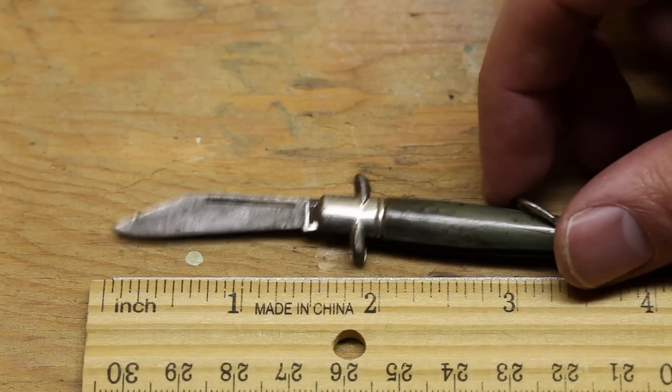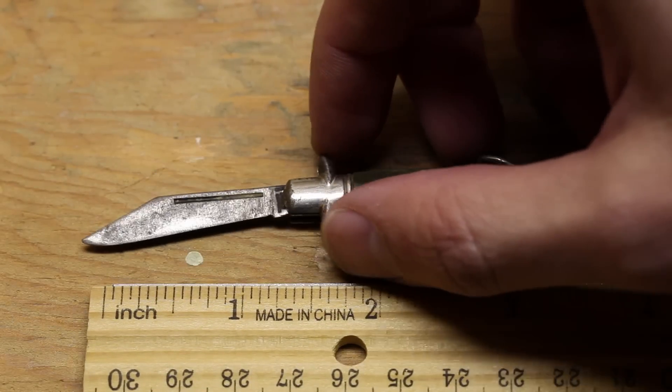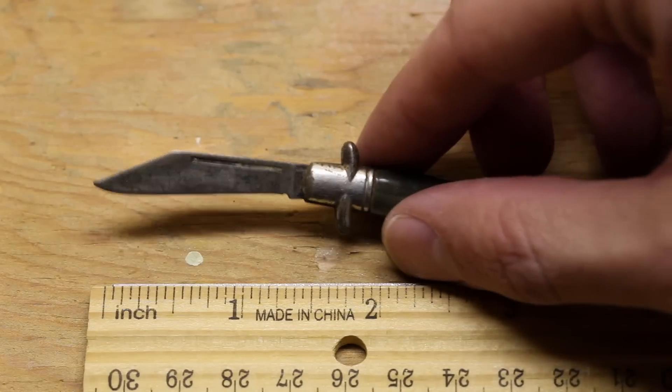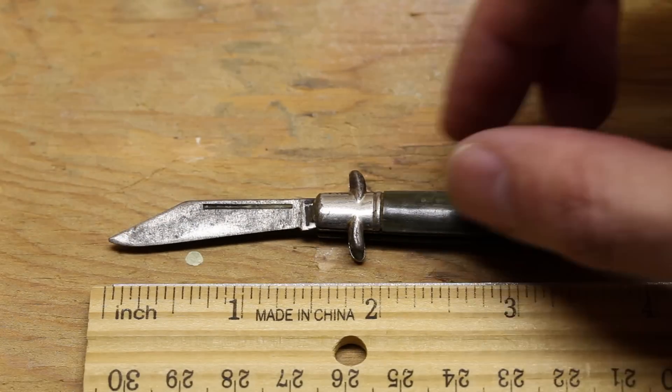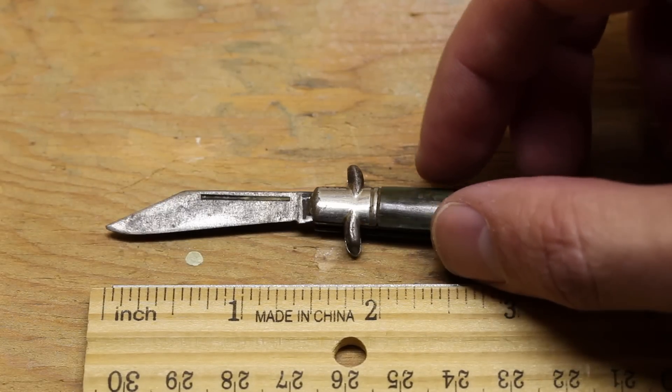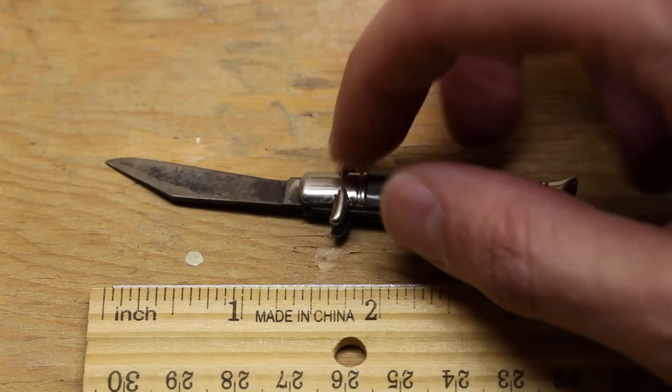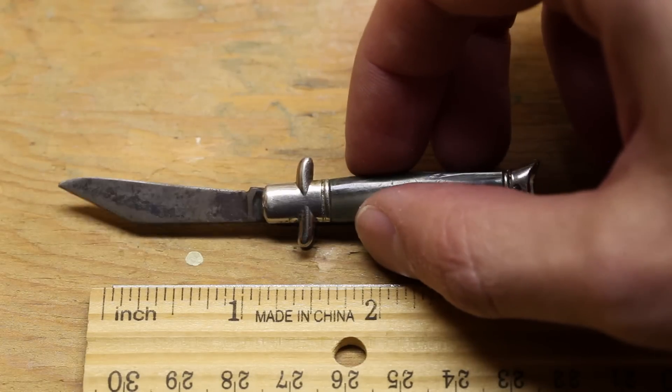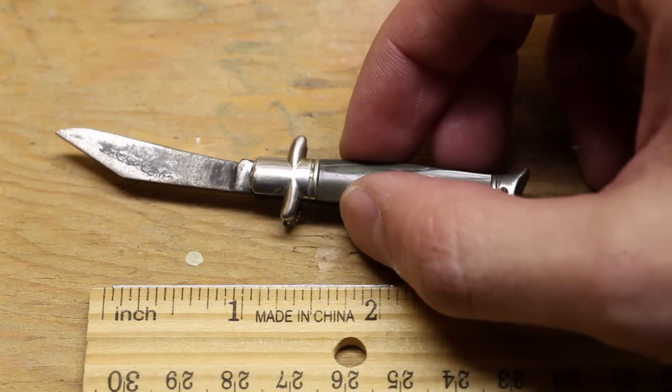This one is kind of unique in that it has these kind of hand finger guards, I guess, in the old Italian stiletto style, you know, with the little kind of cross up here. It's kind of unique.